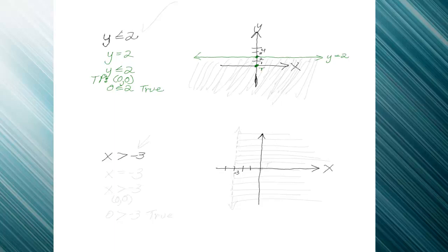So that means that with (0,0) giving me a true answer, I will shade on the true side. And this is what the inequality y is less than or equal to 2 looks like when I'm drawing it on the x and y axes.